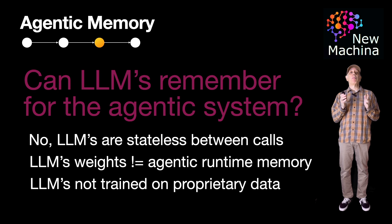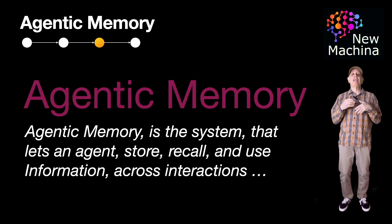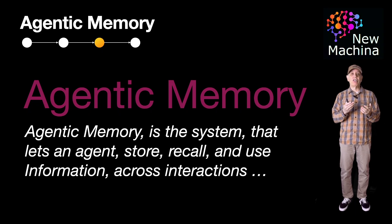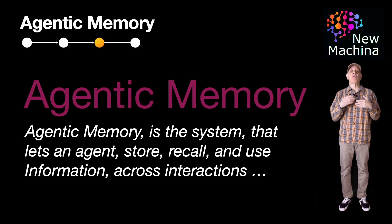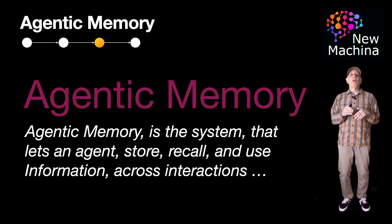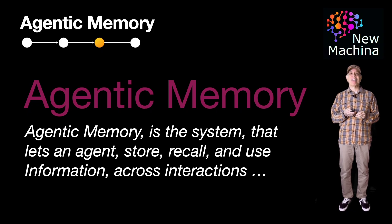Okay, so in summary, agentic memory is a system that lets an AI agent store, recall, and use information across interactions. This, for the agent, enables continuity, learning, and context awareness over time. Okay, so let me know what you think of agentic memory. Feel free to share your thoughts in the comments below. I want to hear what you think about this topic.